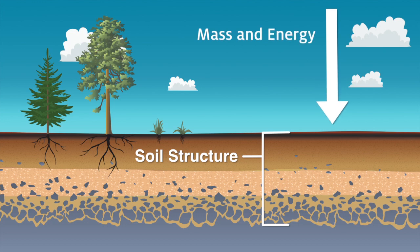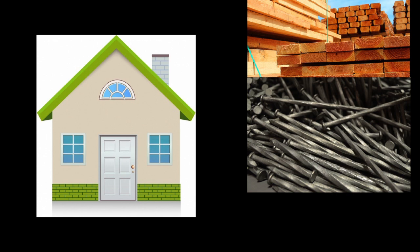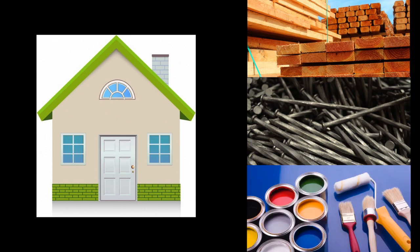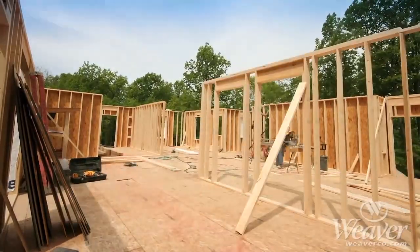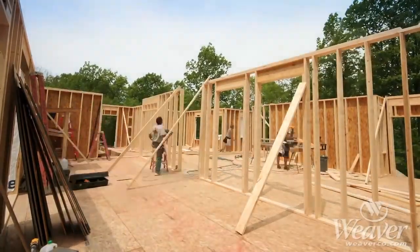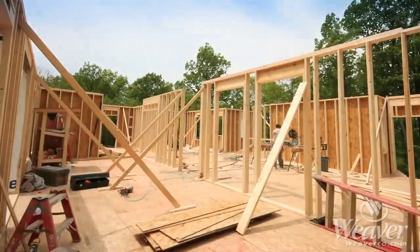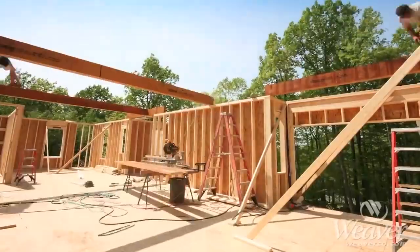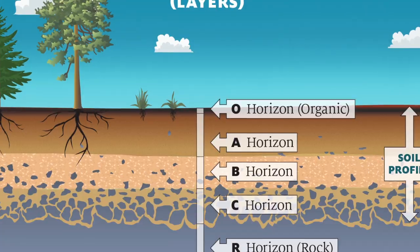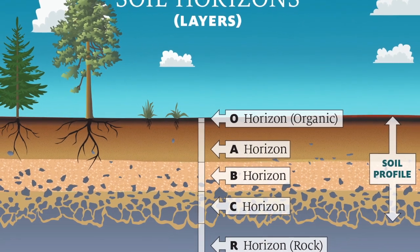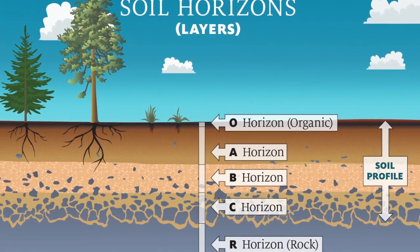So how does energy enter the soil? Think of building a house. You have a variety of materials, from wood to nails to paint, and you need all these parts to make your house. Energy is required to lift the boards, nail them together, put on the roof, and paint the walls. You need energy to transform the materials into the structure of a house. Similarly, energy is required to build or create a soil.